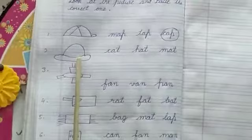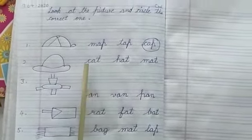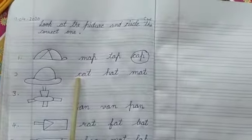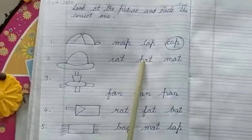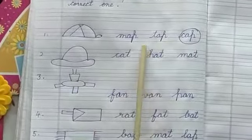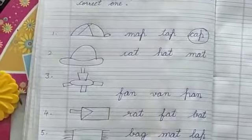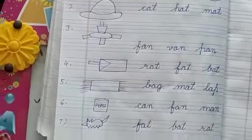Next picture is hat. And now you just find out where is hat. Is it hat? K-at, cat. H-at, hat. There is hat. Now you will circle the hat here. And like this you will do others.